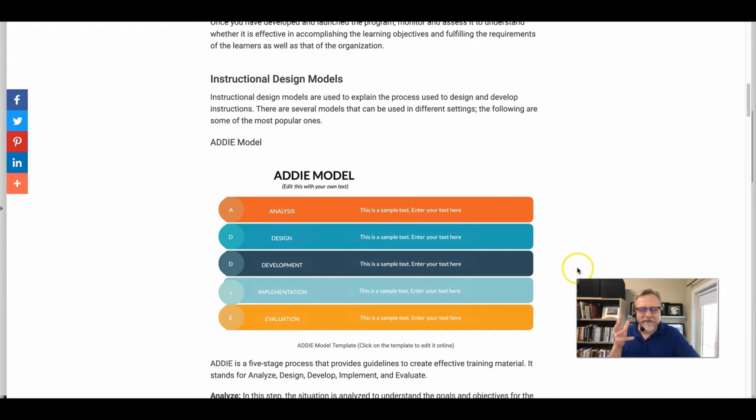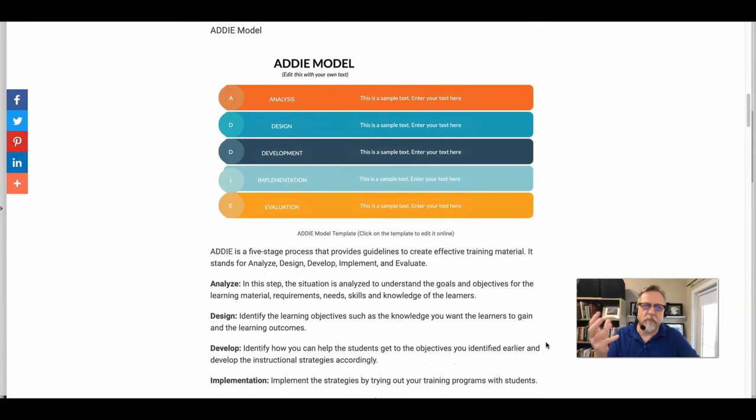They're really not design models. They don't really help you think about the difference between competency-based and outcomes-based instruction. That is something you have to do prior to using one of these models. These models are more, I would almost argue that they are implementation models. And so the ADDIE model is really about going from once you've got a starting point, then building it out. The ADDIE model is very popular.